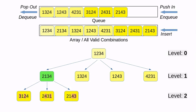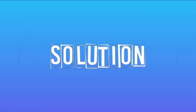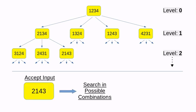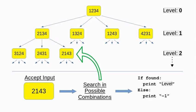Now once you have all the possible combinations of the puzzle and also the number of steps required to achieve that state, you just need to accept the input and search in all these possible combinations. If you found it, then just print the level. Otherwise, print minus 1. It is as simple as that.